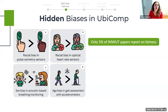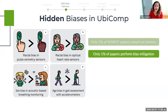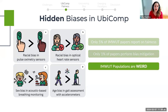Out of all papers published in IMWUT in the past five years, only 5% reported fairness assessment, and even less — a mere 1% — reported bias mitigation methods, regardless of whether they encountered bias or not. Ubicomp samples are indeed WEIRD, even though they are usually gender balanced: they are otherwise predominantly young, white, western, highly educated, and employed populations. We did not encounter any fairness metrics in the studied papers; rather, fairness comparisons were based on performance metrics.